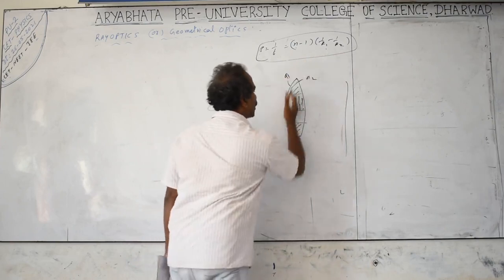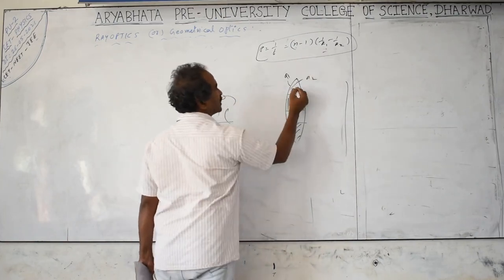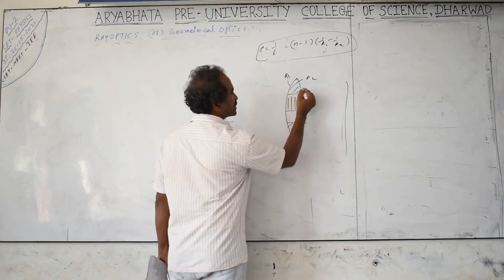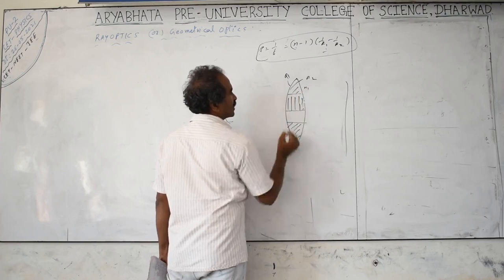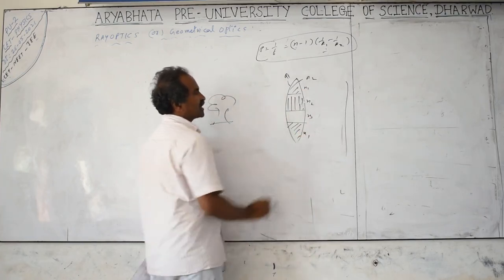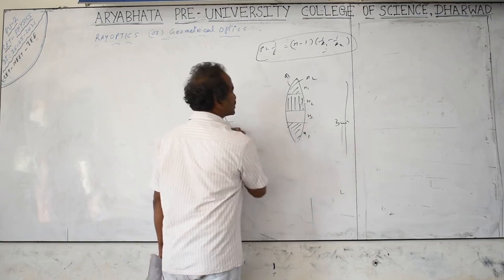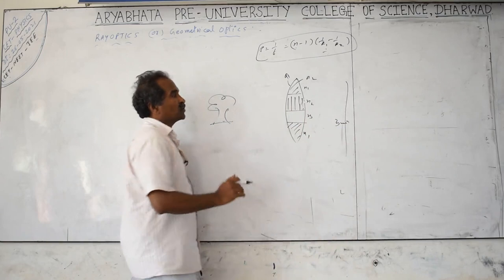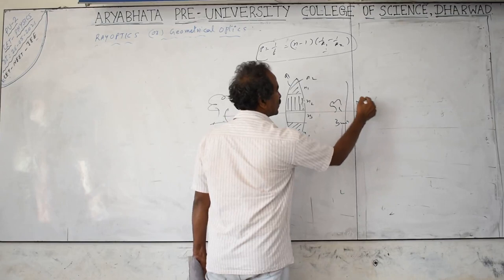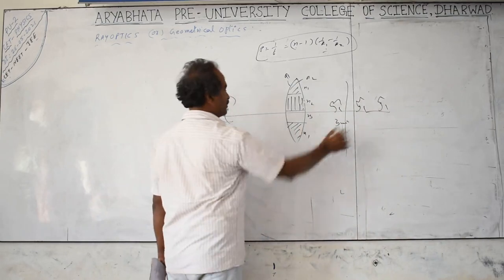If R1 and R2 are fixed, then n is the only variable. If we have materials n1, n2, n3 — for example, three different materials — we get three different focal lengths and therefore three images formed at different positions. Number of different materials equals number of images.